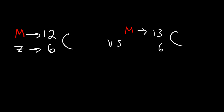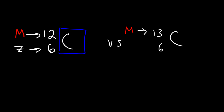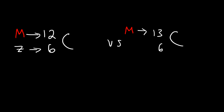So isotopes are composed of the same element — in this example both isotopes are elemental carbon. If the elements are different then you don't have an isotope. Isotopes also have the same atomic number because the element is the same. However, they differ in the mass number, so isotopes will always have different mass numbers.